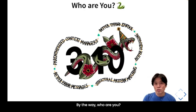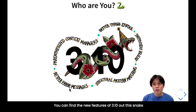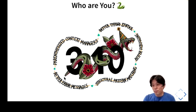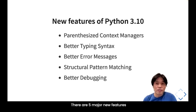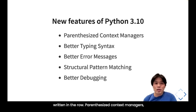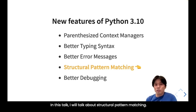The Python 3.10 release logo features a snake image. You can find the new features of 3.10 around this snake. There are five major new features written in the logo: parenthesized context managers, better typing syntax, better error messages, structural pattern matching, and better debugging. In this talk, I will talk about structural pattern matching.